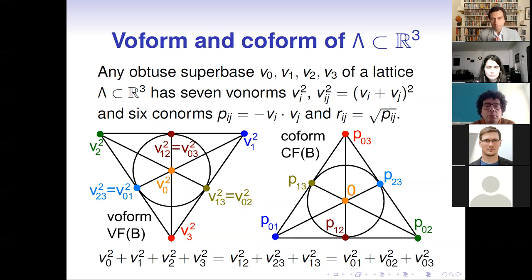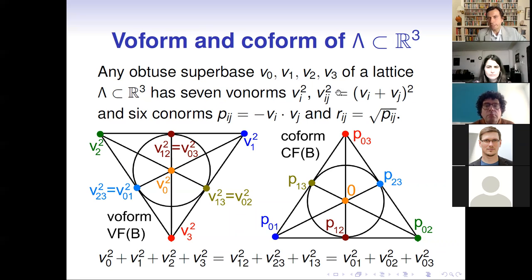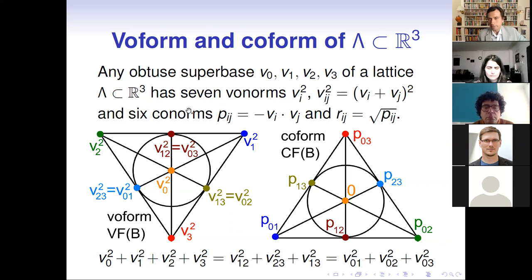In three dimensions we have four vectors in the super base: v1, v2, v3, and v0 = minus v1 minus v2 minus v3, so the sum of all four vectors is exactly zero. This obtuse super base now has seven vo-norms: the squared lengths of the original four vectors, plus the squared lengths of pairwise sums v_i + v_j. Note that v_k + v_l has exactly the same squared length as another complementary pair because the sum of all four equals zero. So we get seven vo-norms and six co-norms.